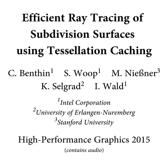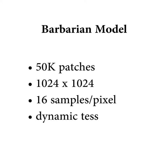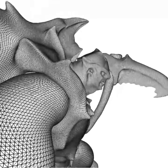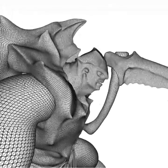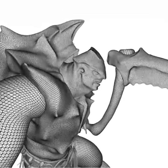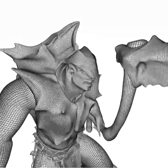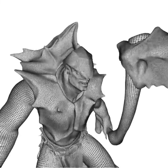In this video, we show interactive live captures of our ray tracing algorithm. In all examples, we render the Barbarian model, which is composed of 50,000 patches. All frames are generated at a resolution of 1024x1024 pixels, with 16 sample rays per pixel.